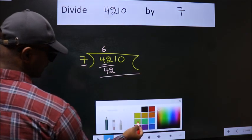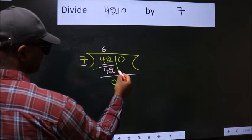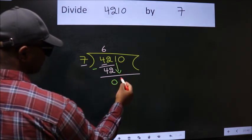Now we should subtract. We get 0. After this, bring down the beside number. So 1 down.